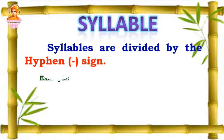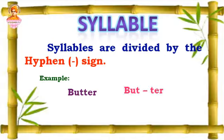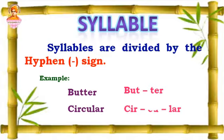Example: Butter. I am going to split it as but-ter. So I have used a hyphen sign in between these words while splitting it into syllable. Next, circular. It is split into cir-cu-lar.